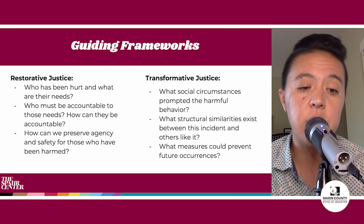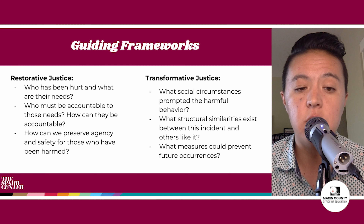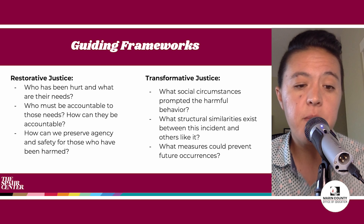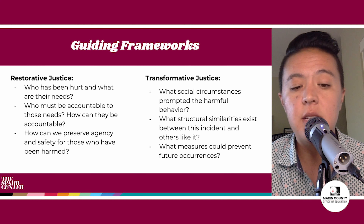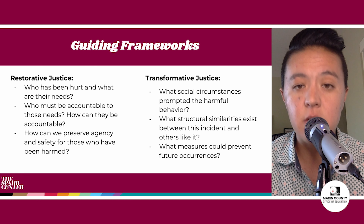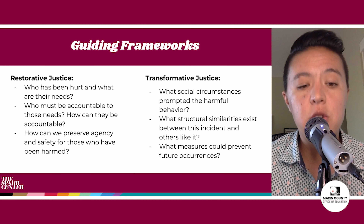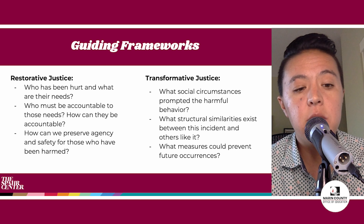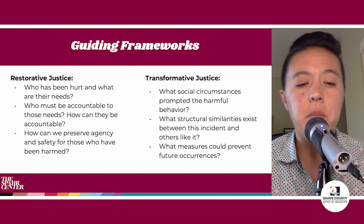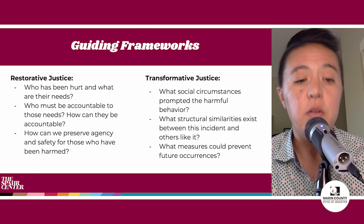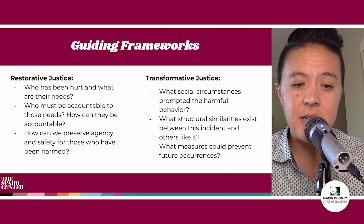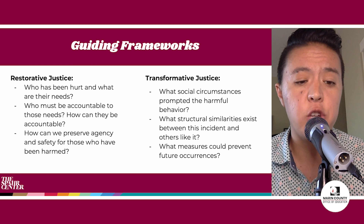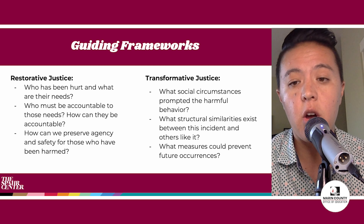For transformative justice, we can look at situations with questions like: What social circumstances prompted the harmful behavior? What structural similarities exist between this incident and others like it? And what measures could prevent future occurrences? Transformative justice examines the systems and barriers in place that prevent growth individually and from a community perspective. We seek to undo harm and create change through coming up with preventative measures.